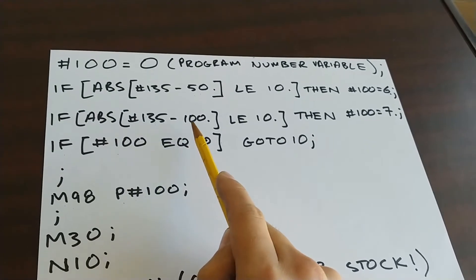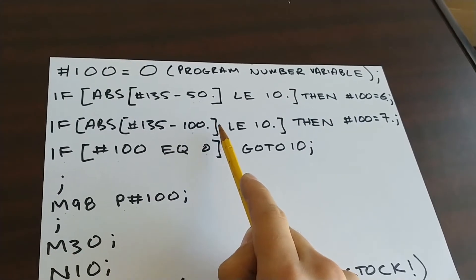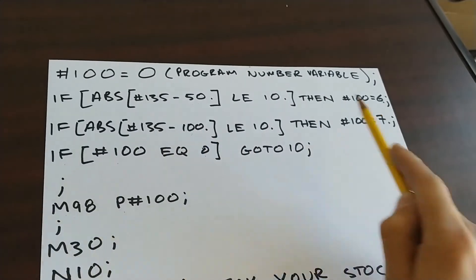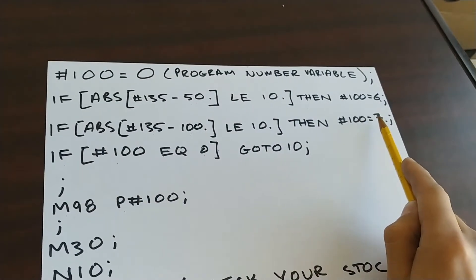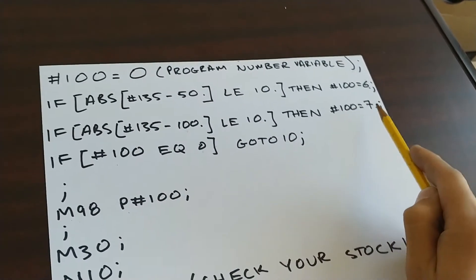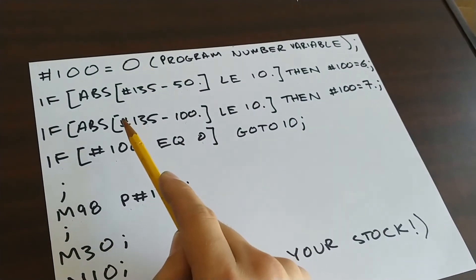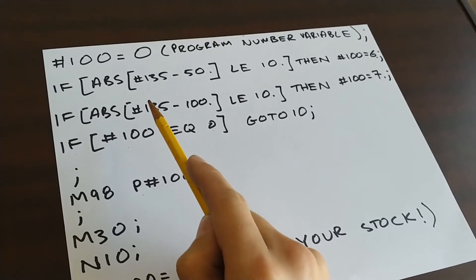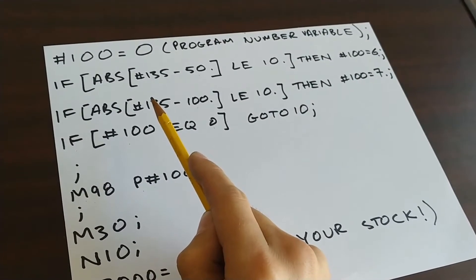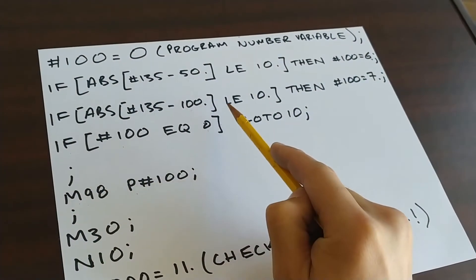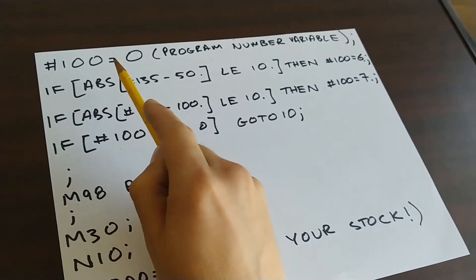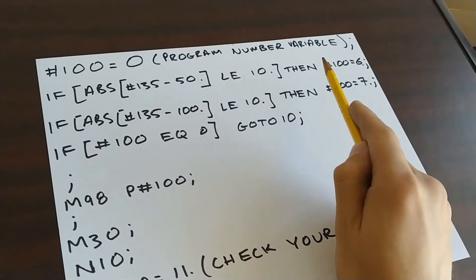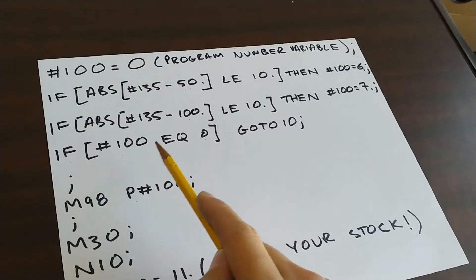Likewise, for the second line of code, if I'm within plus or minus 10 of 100, then I'm going to set pound 100 equal to 7. Now remember, if both of these statements are false, if I've really messed up and somehow managed to put a 200 millimeter piece of stock in here, then by the time I get to here, pound 100 is still going to be zero. None of these statements happened. So if pound 100 is equal to zero, then I'm going to go to 10.